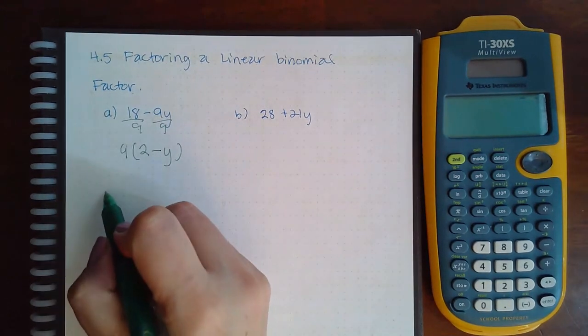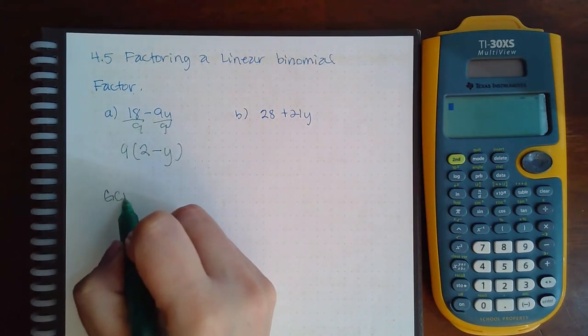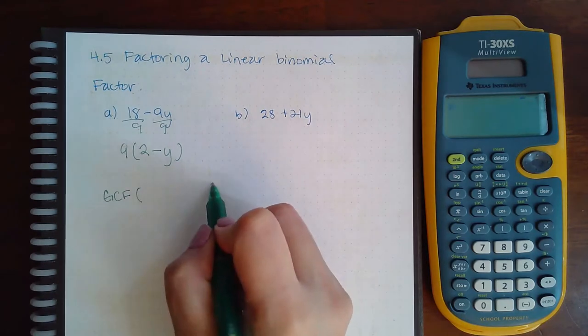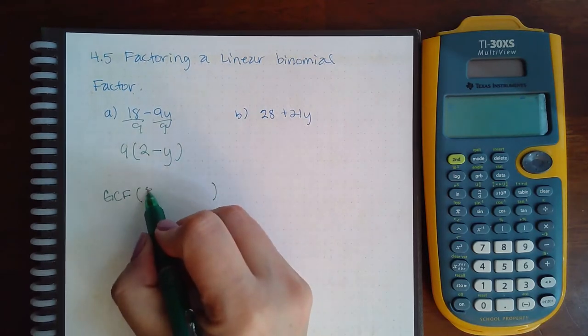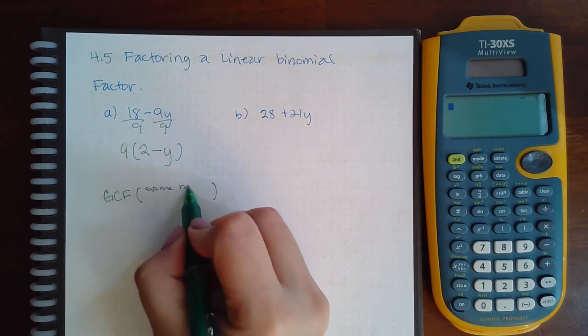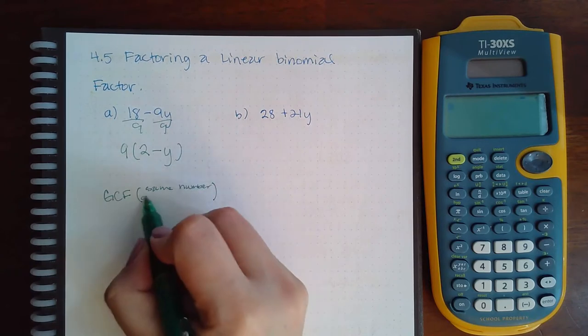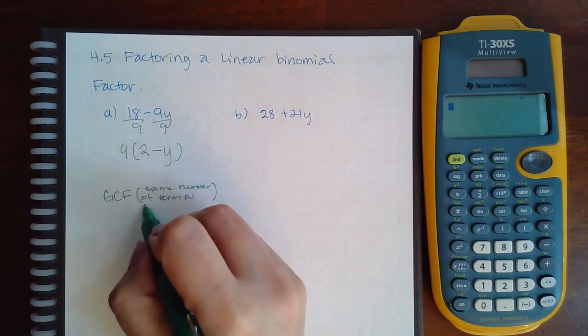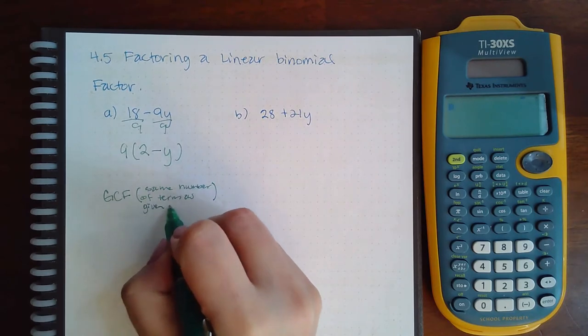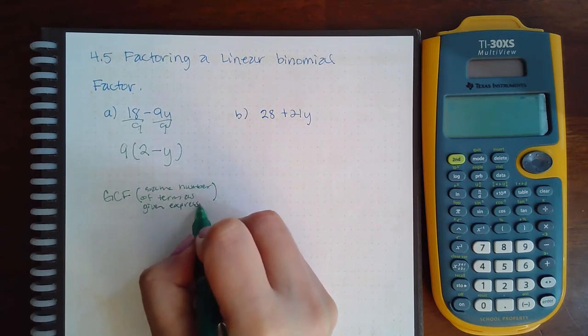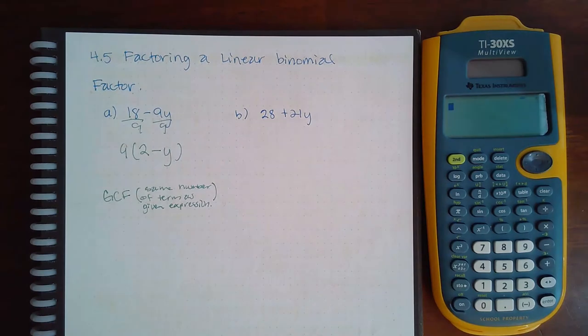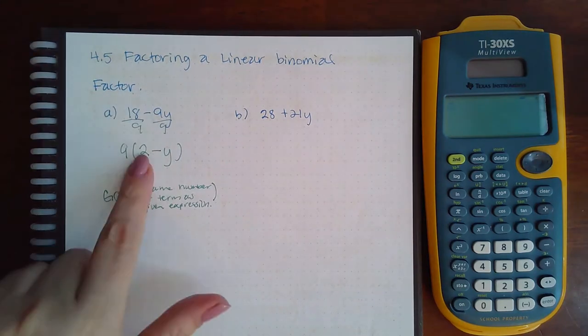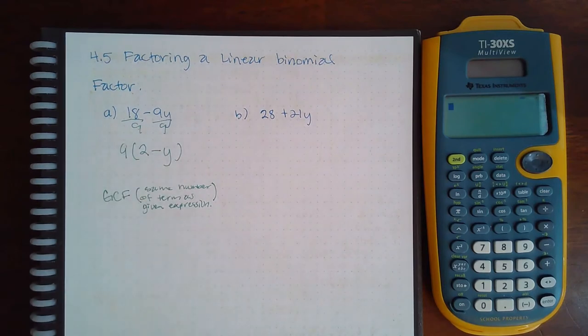One thing I need to make you realize is that if you have a GCF, you factor it out, and then you should have the same number of terms as given expression inside the parentheses. So if there were two terms in the original, then you should have two terms inside that parentheses.